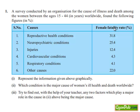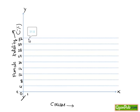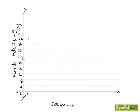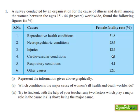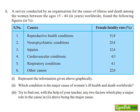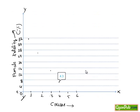Seeing the causes: the first one, reproductive health conditions, is 31.8%, so marking it we get near to 32. Plotting the graph, the second one, neuropsychiatric condition, is 25.4%, which comes nearly in between 24 and 28. Third, injuries, which is 12.4%, we locate it above. Cardiovascular conditions, which is 4.3%, we get it as follows.